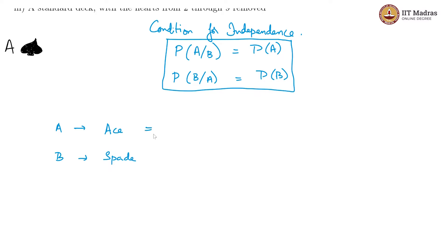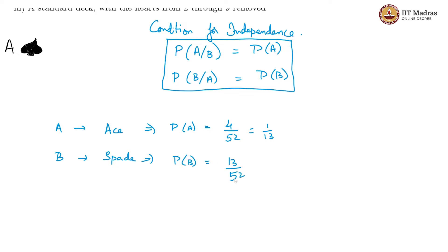P of A, that is the probability of the card being an ace, would be 4 by 52 in a standard deck. There are 52 cards in a standard deck and of them 4 are aces, so that is 1 by 13. And P of B is 13 by 52 — there are 13 spades out of 52 cards — so you have 1 by 4 as the probability for a spade coming up.